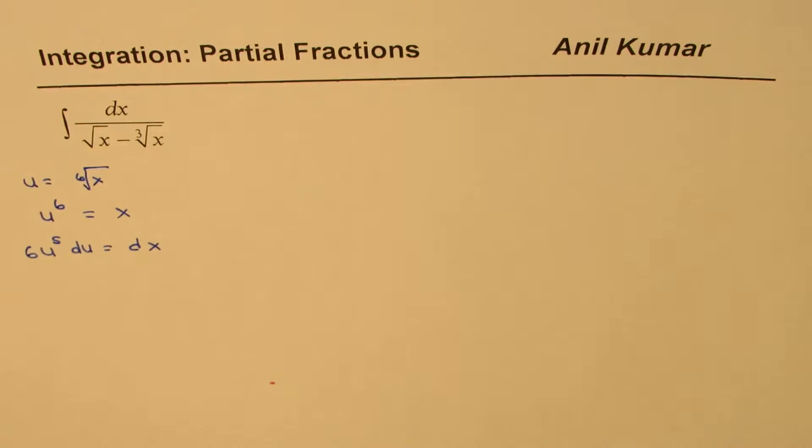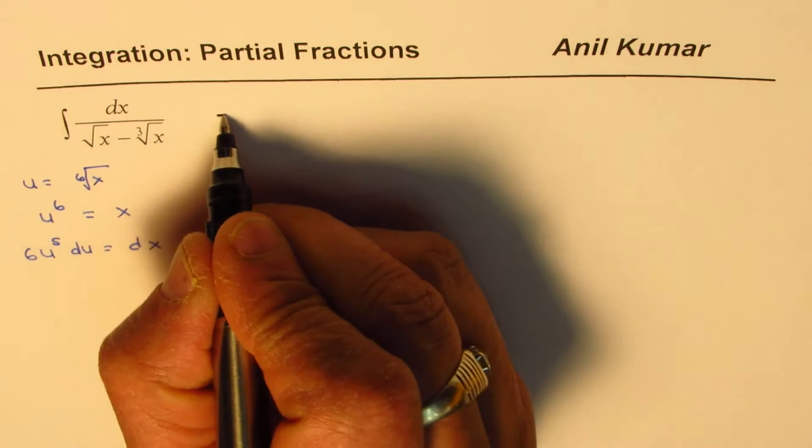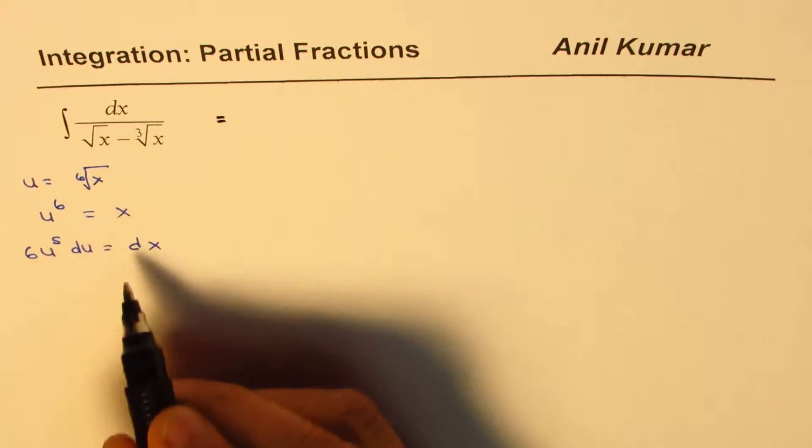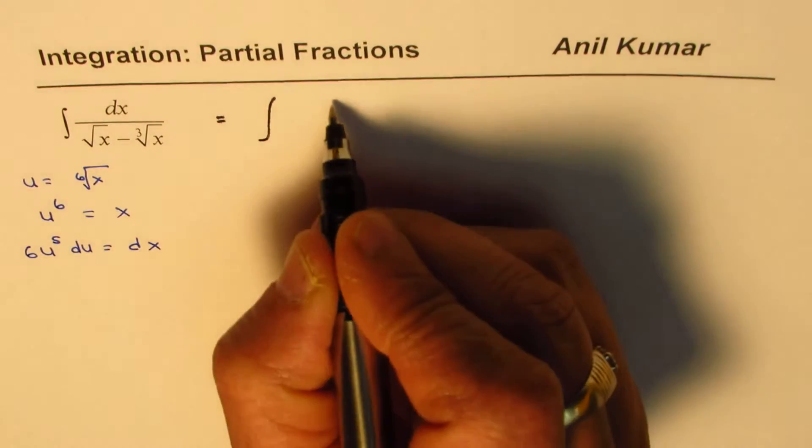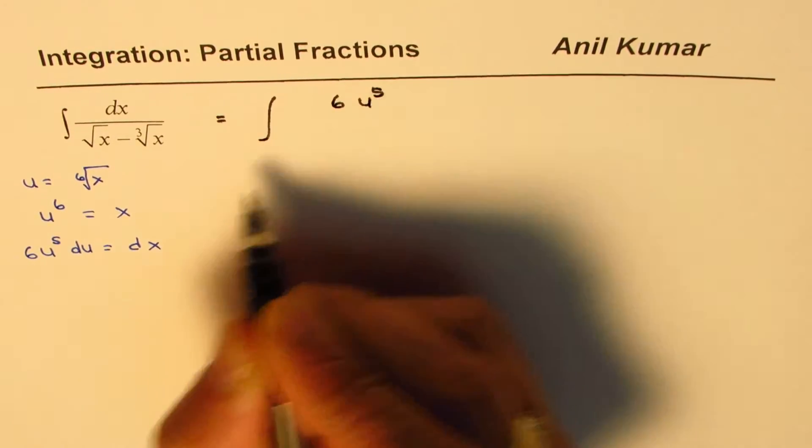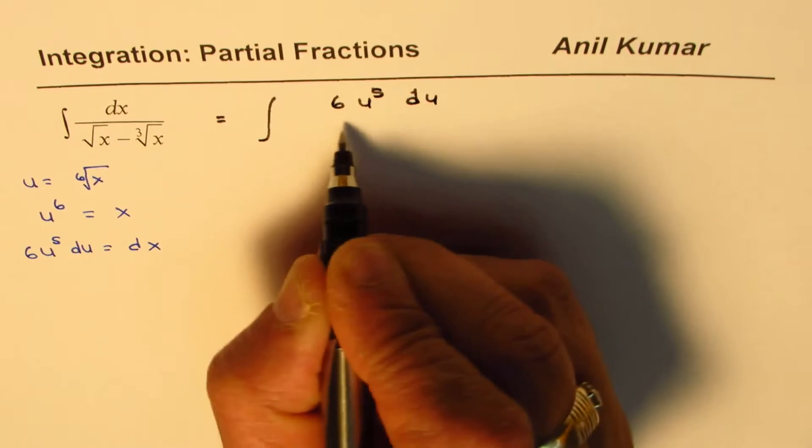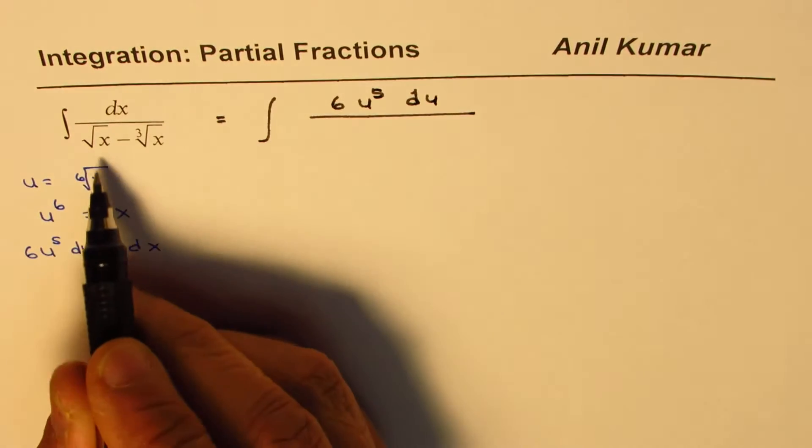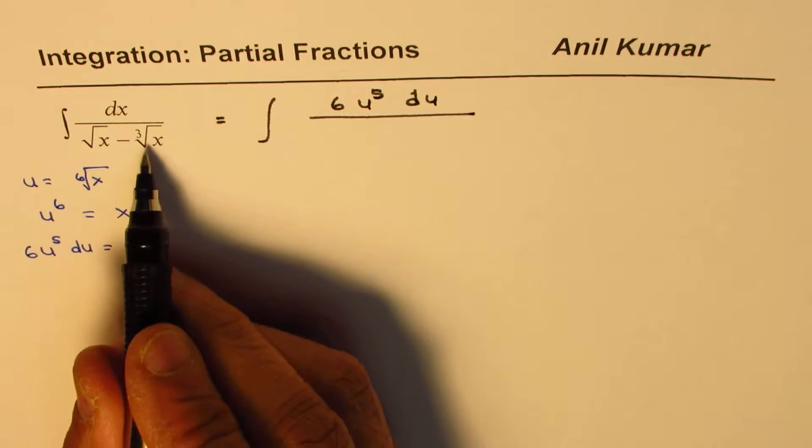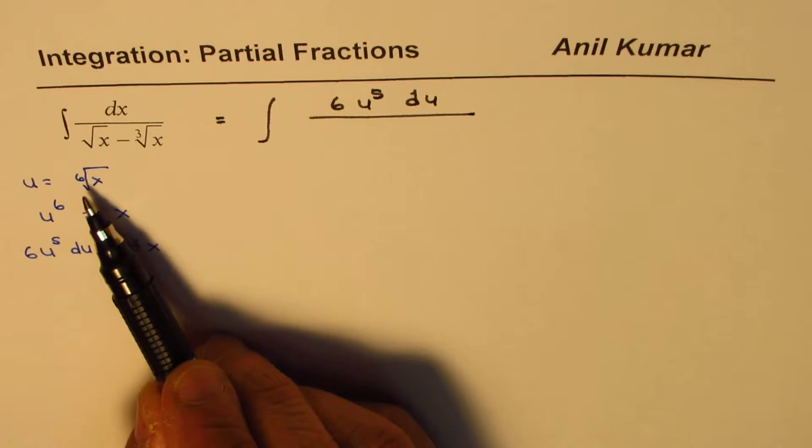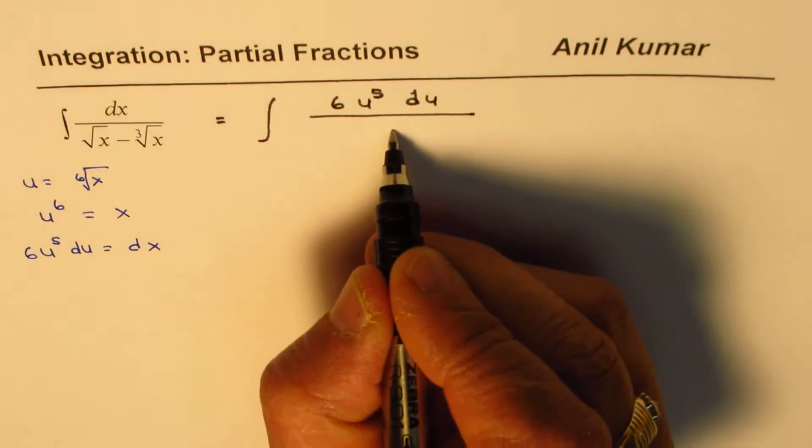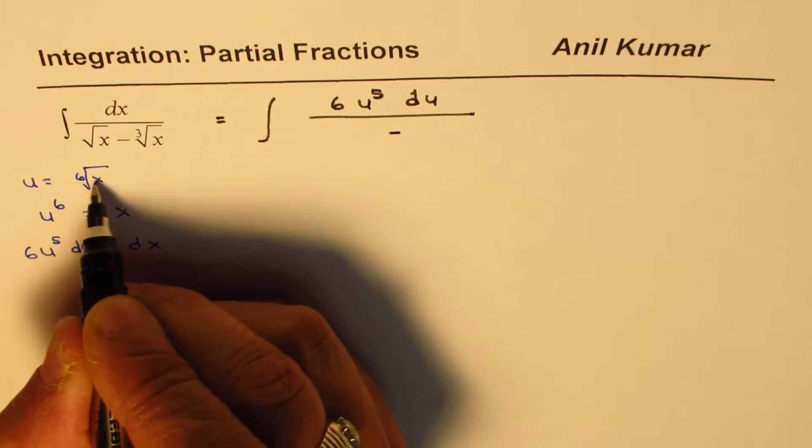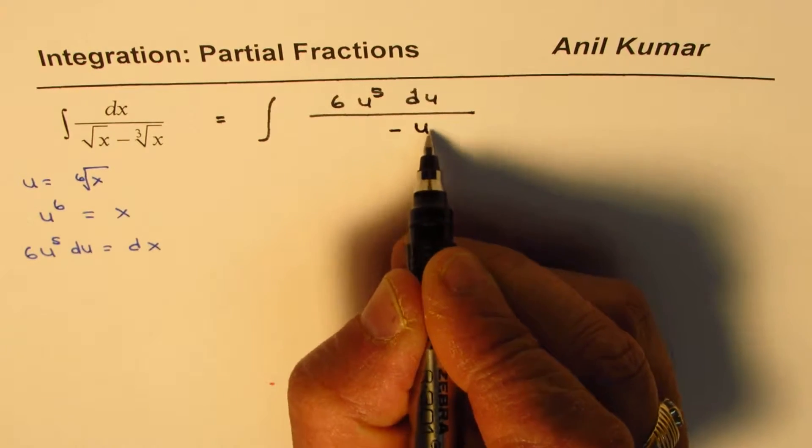Now let me rewrite the expression using u. So what you get here is basically dx will be replaced by 6u to the power of 5 du over square root. See, 6th root is this. So when I square this, I get cube. Do you see that? So that latter half is actually when you square this, you get this. So you get u square here.